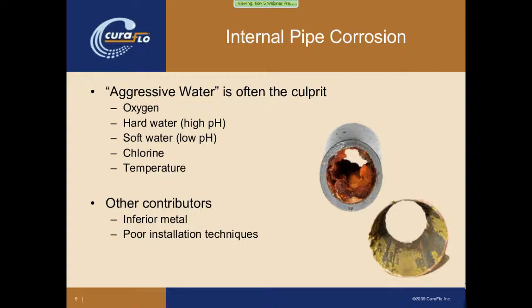Factors like chlorine — if you're on a public water system, how much chlorine is added by the municipality — is a very corrosive chemical. And then temperature: hot water systems accelerate the problems, as heat magnifies corrosion. Typically when you have pipe problems, you'll see it in your hot water system before the cold water system.